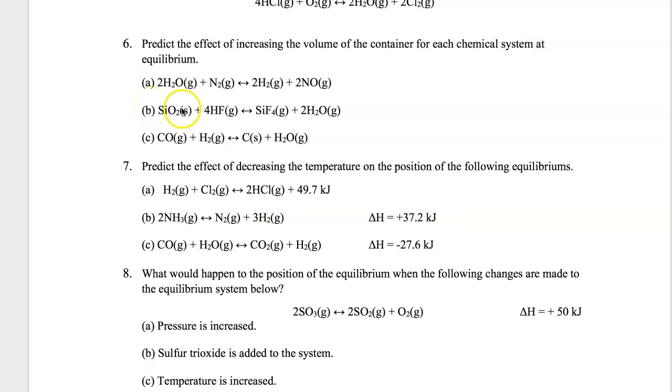For Le Chatelier Principle questions, we're going to start with number 8. I like to start with B because raising or lowering the concentration is the most intuitive. So if we add sulfur trioxide to the system, that's going to be adding a reactant.